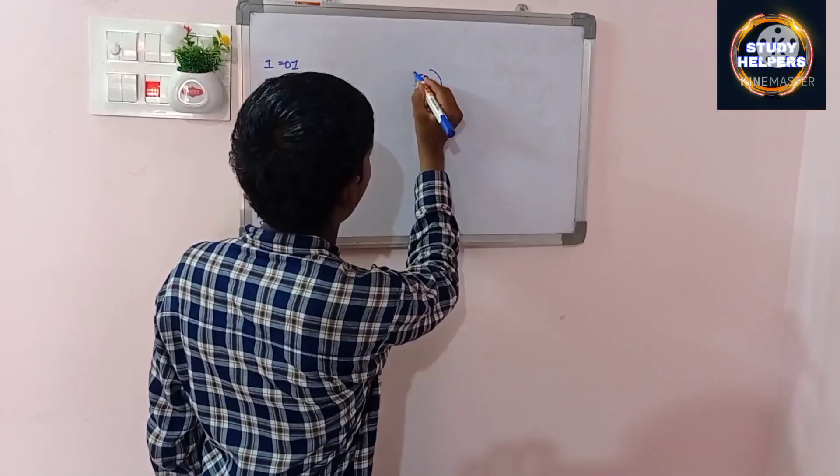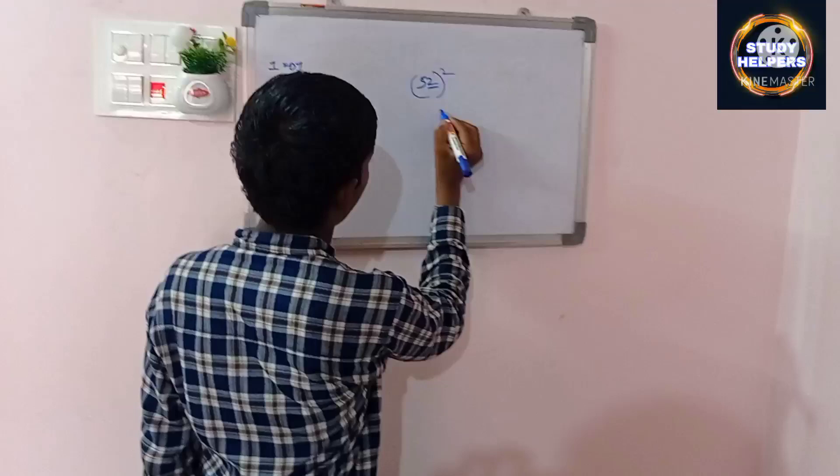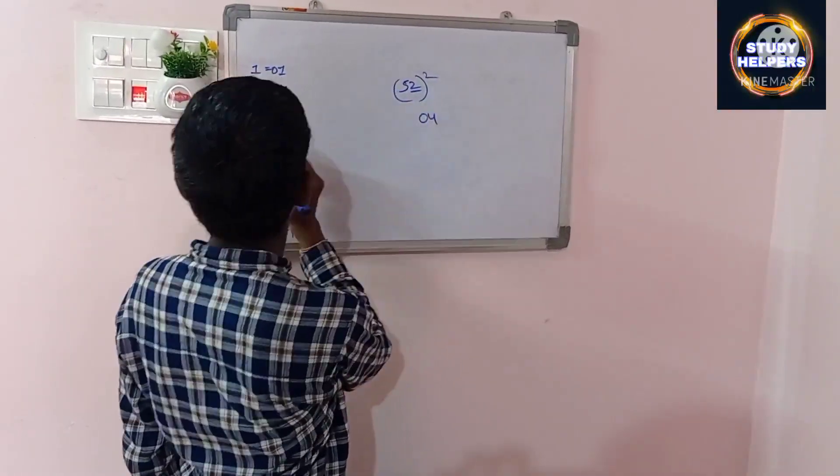Example: 52 square. First we want 2 square: 0, 4. 5 square: 25.